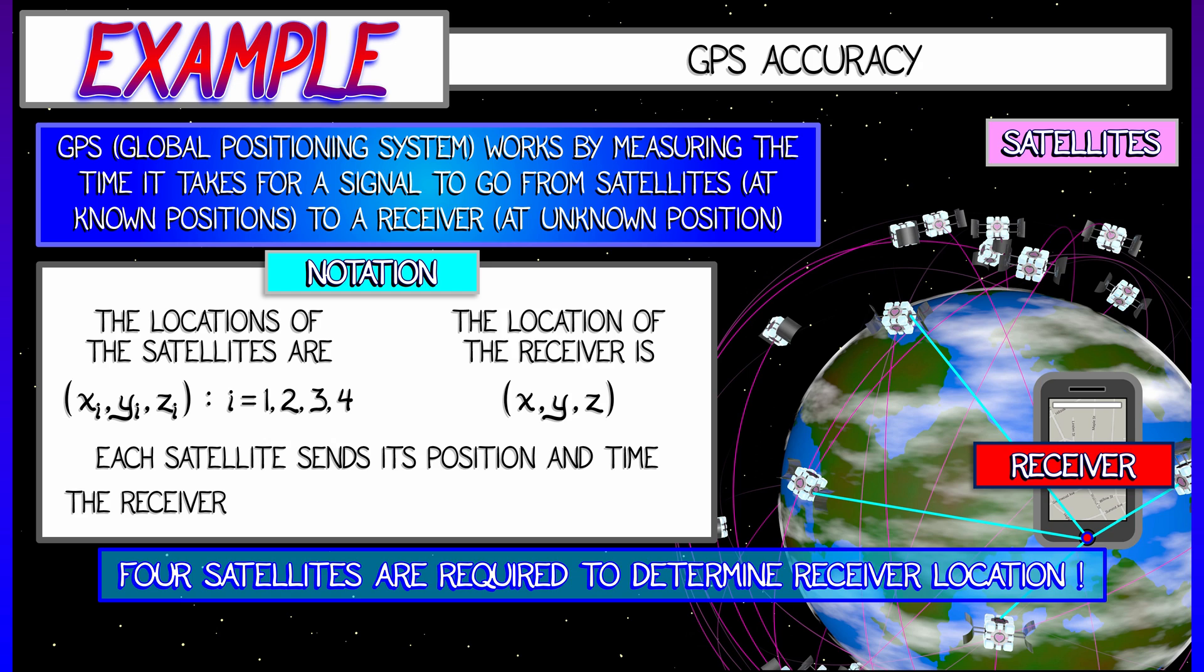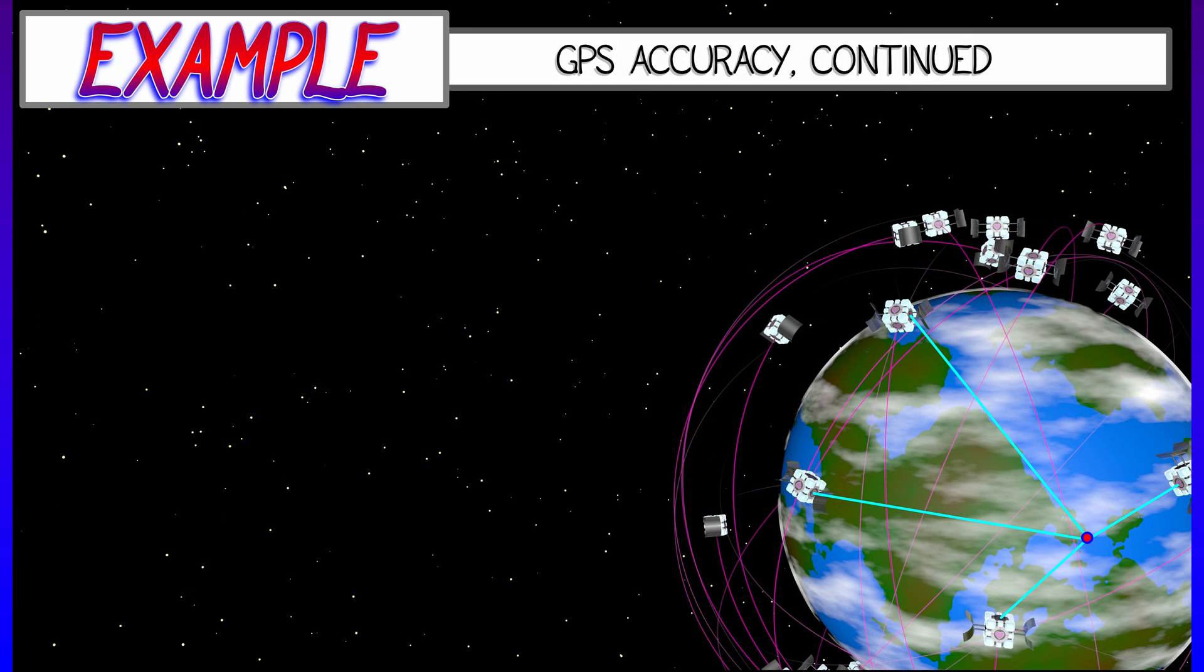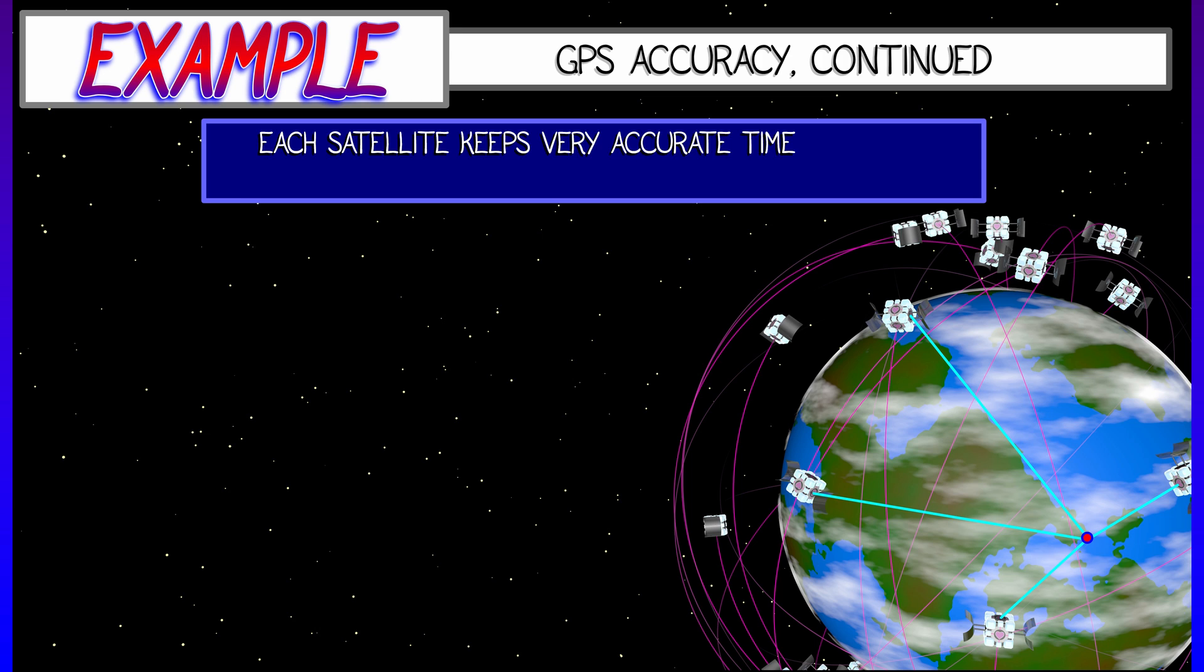Now each satellite sends out its position and the time at which it is sending it in a ping. Your phone receives that and estimates the time difference, the difference in time between when the ping was sent and when it's received. Call that t sub i, i going from one to four. And from that data it can infer position. How? This is pretty simple. It's really just the Pythagorean theorem.